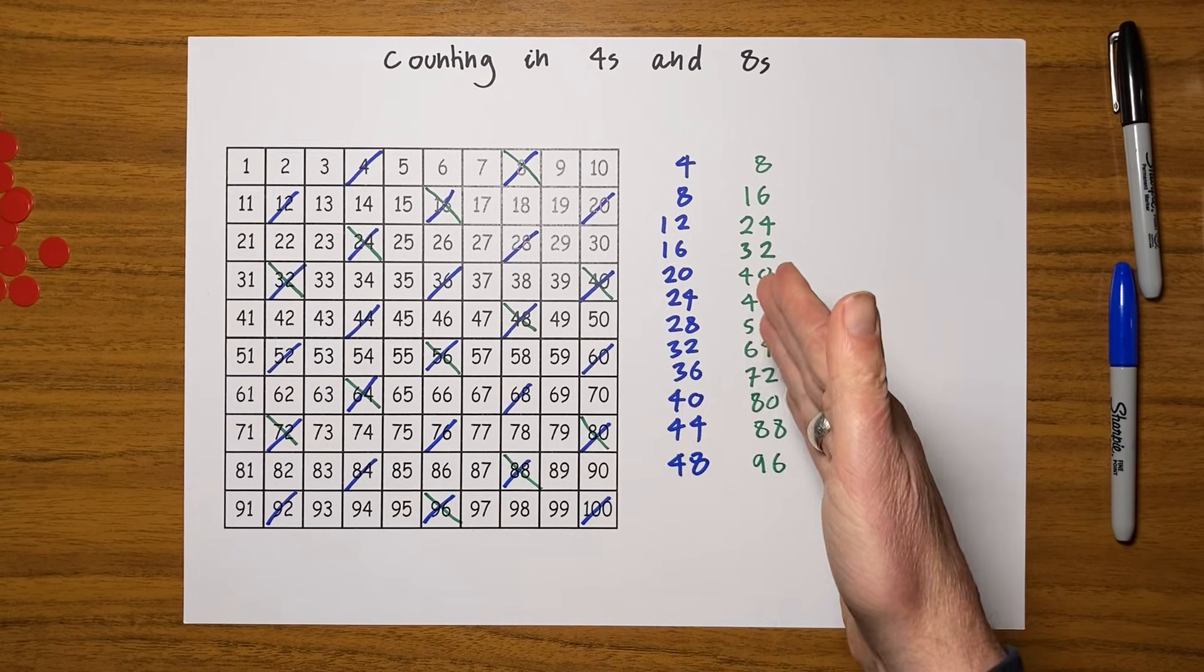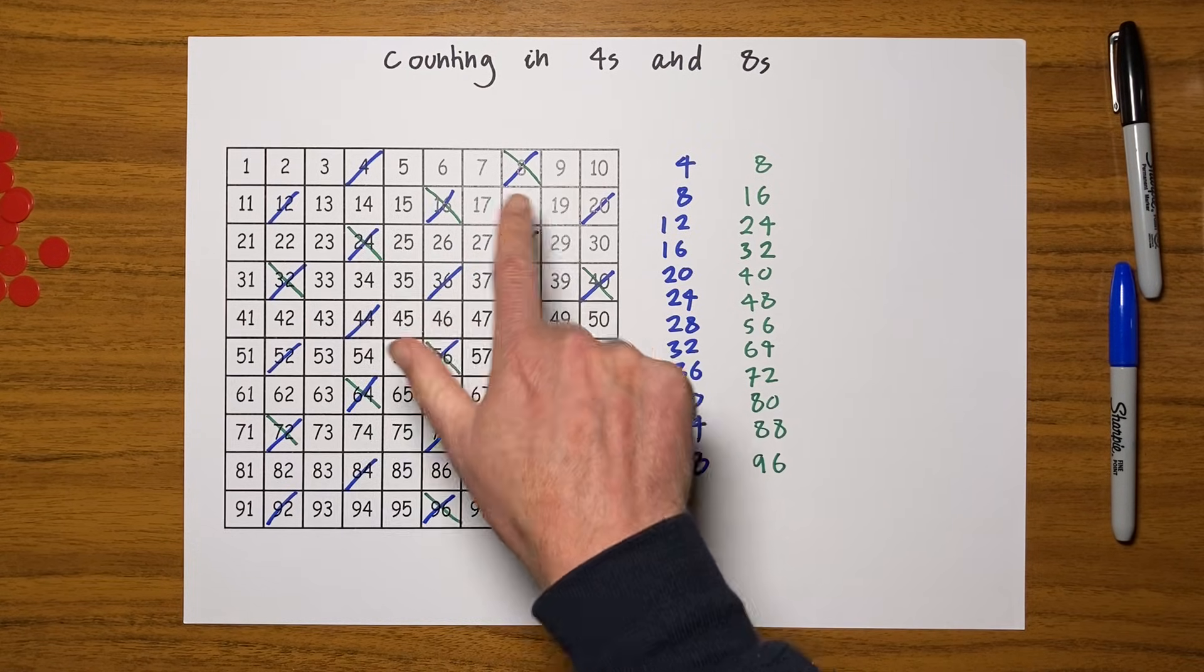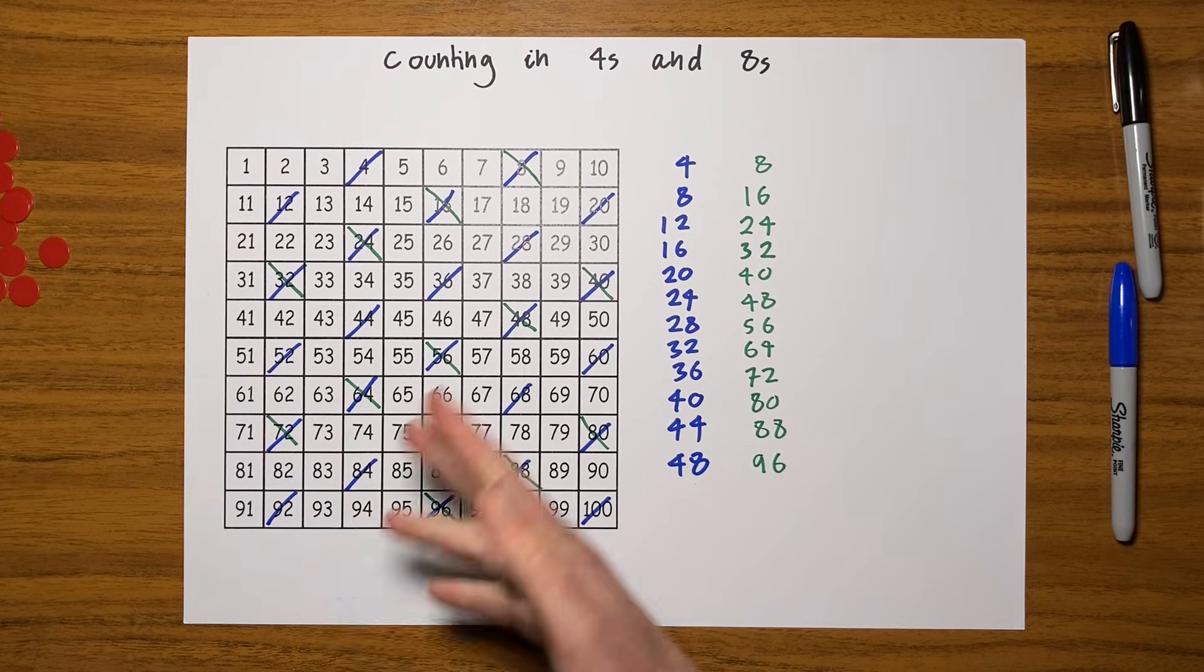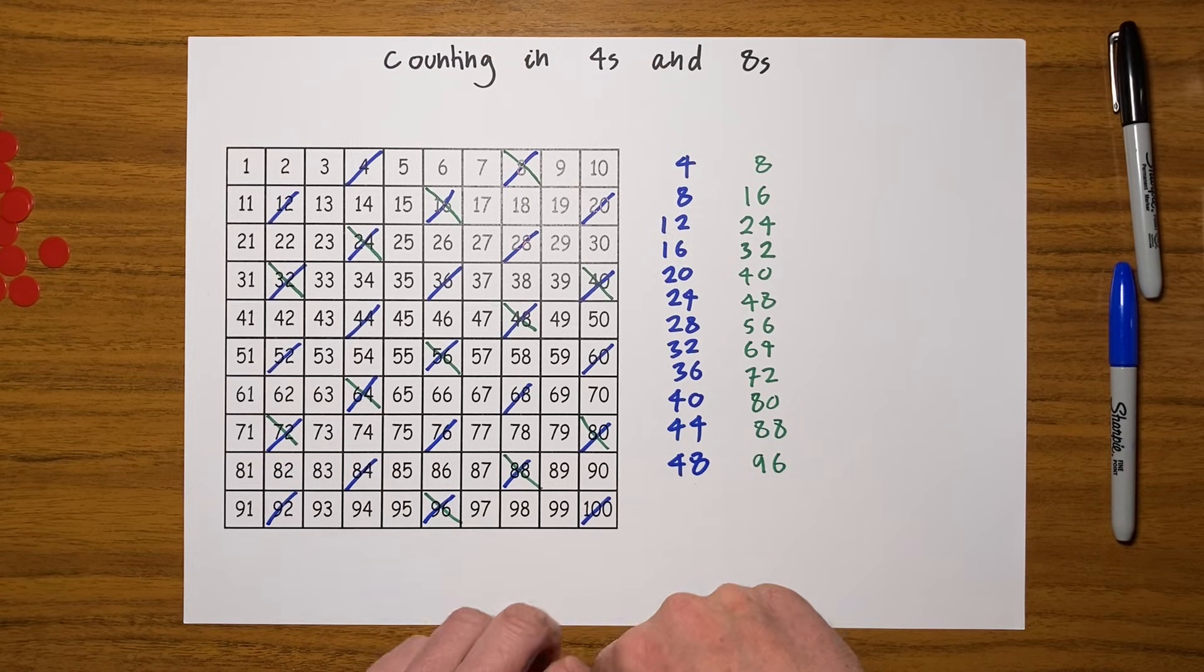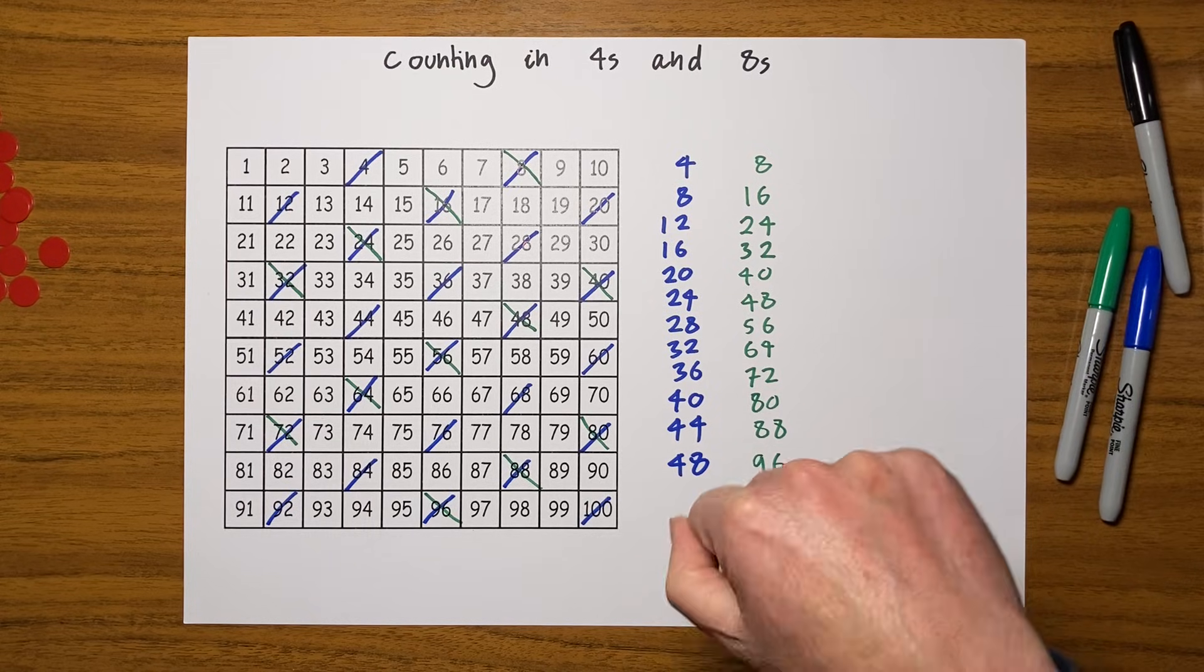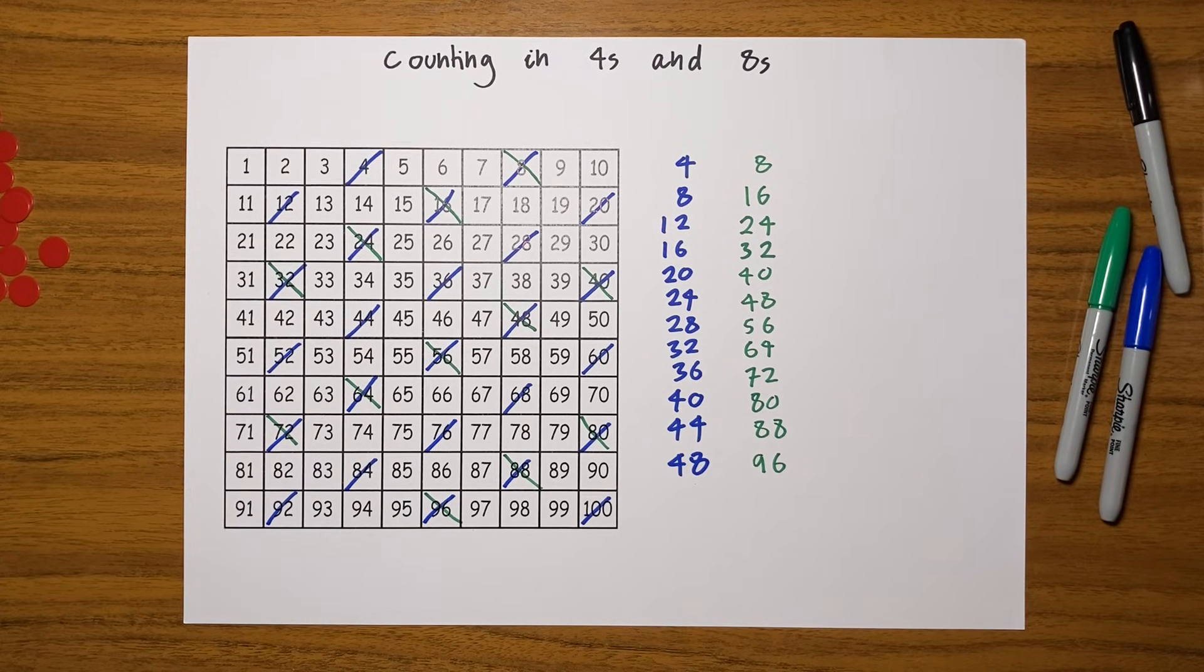You can see that when I'm counting in eights, I'm counting every other four. Do get a hundred square, print it out, get some counters, get some colored pens, and practice counting. It is such a useful skill. I've also got a general purpose counting video which I recommend you have a look at. Enjoy your counting!